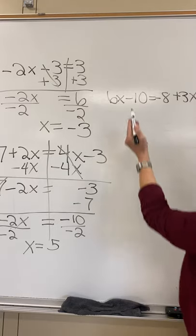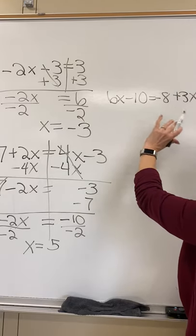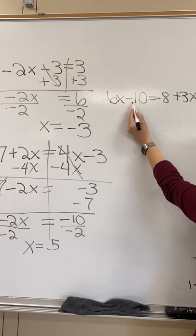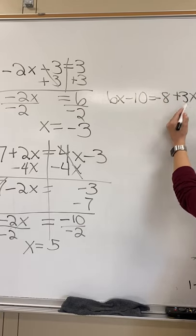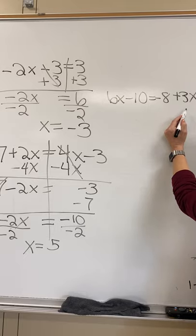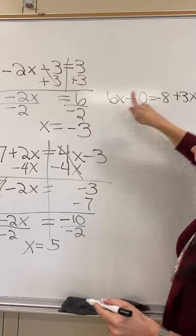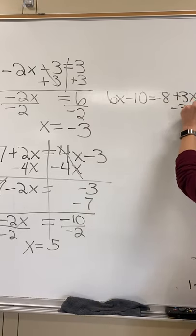Same situation again. I've got four different terms. I could subtract 6x from both sides. I could add 10 to both sides. I could add 8 to both sides. Or I could subtract 3x from both sides. So I like to move all my x's to the left. So I'm going to start by subtracting my 3x from both sides.